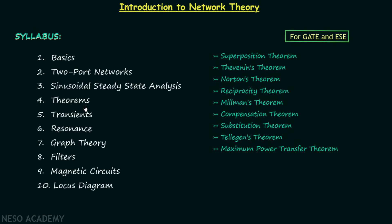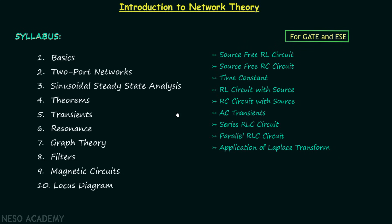Chapter number 5 is Transients. Transients are present in a circuit whenever the circuit is subjected to any change and has energy storing elements like capacitor and inductor. In this chapter we will find transients in source-free RL circuit, source-free RC circuit, and we will understand what is time constant. Then we will find transients in RLC circuit with source and RC circuit with source. We will also talk about AC transients in series RLC and parallel RLC circuits, and finally the application of Laplace transform in finding transients.